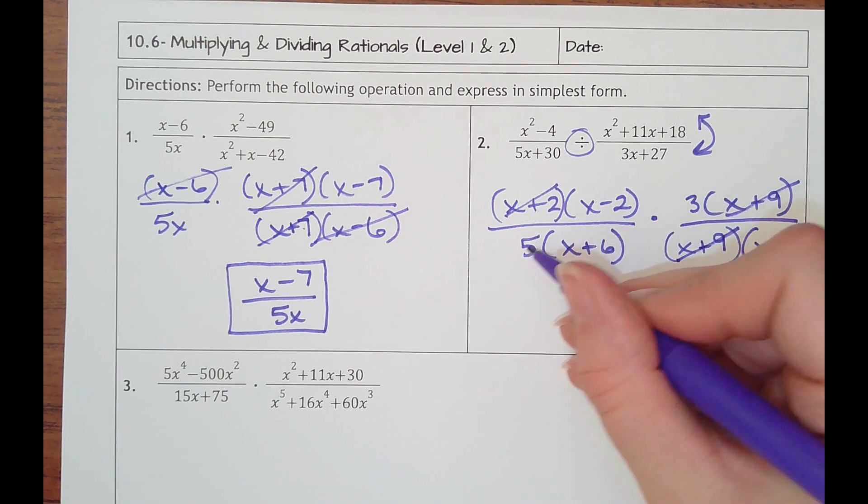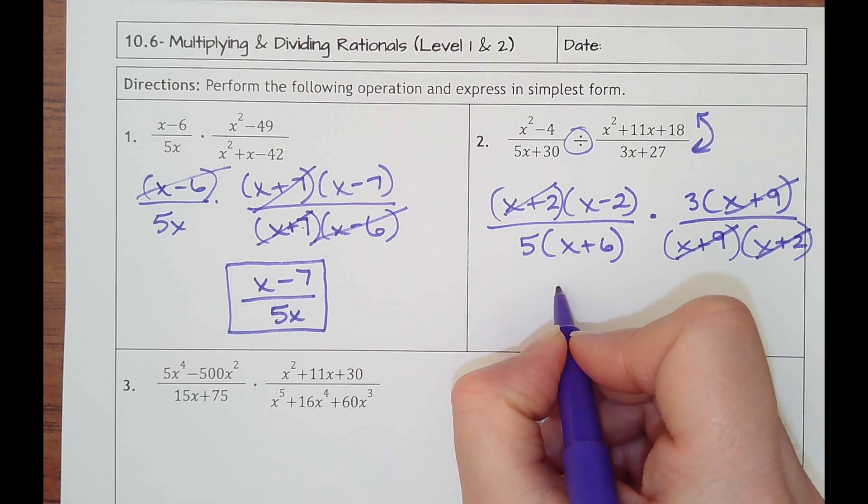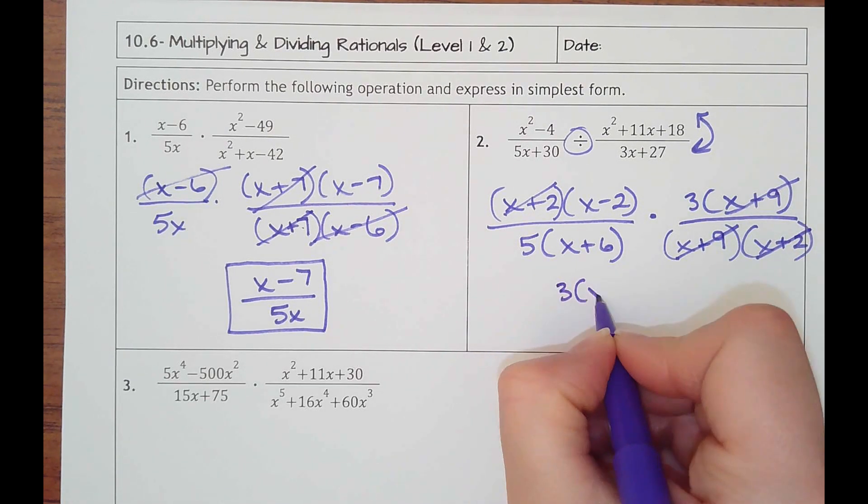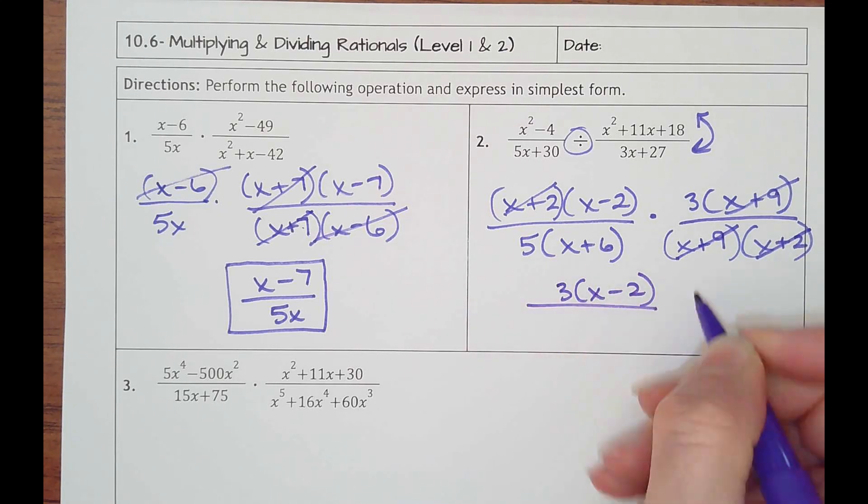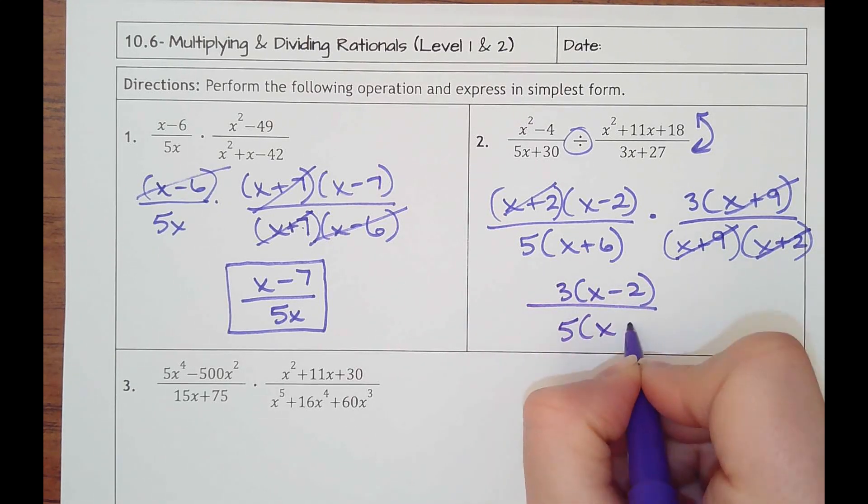Always check your numbers too. The 3 and the 5, no. So that should be my answer. 3 times x minus 2 over 5 times x plus 6.